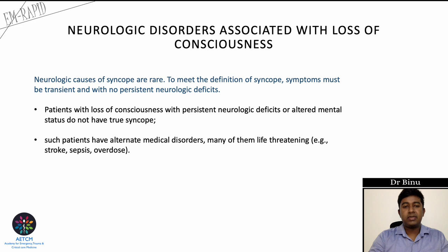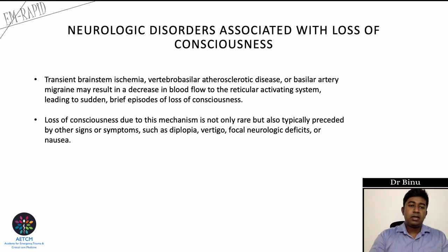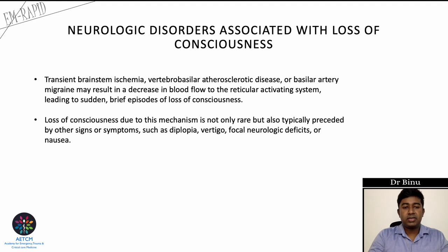Neurological causes of syncope as primary are rare. To meet the definition of syncope, symptoms must be transient with no persistent neurological deficits. Patients with persistent neurological deficits or altered mental status do not have true syncope and may have life-threatening alternative diagnoses like stroke, sepsis, or drug overdose. Transient brainstem ischemia from vertebrobasilar atherosclerotic disease or basilar artery migraine may result in decreased reticular activating system perfusion causing brief loss of consciousness, but this is rare and typically preceded by diplopia, vertigo, focal neurological deficits, and nausea.